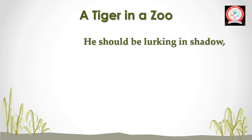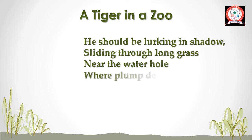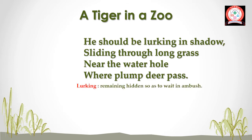'He should be lurking in shadow, sliding through long grass, near the water hole where plump deer pass.' Difficult words: 'lurking' means remaining hidden so as to wait in ambush, and 'plump' means rather fat.